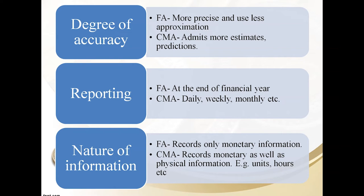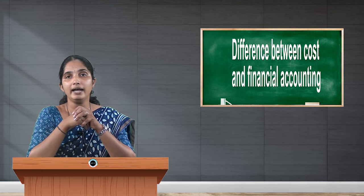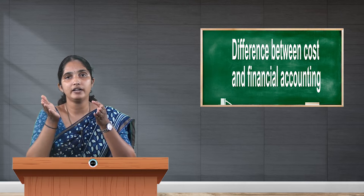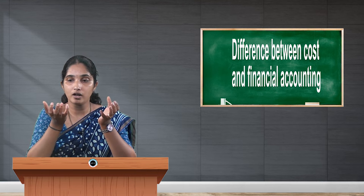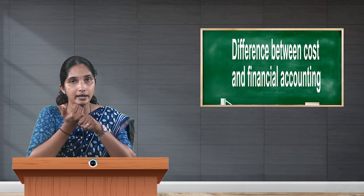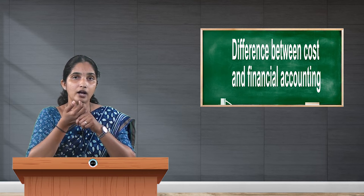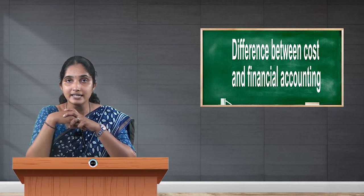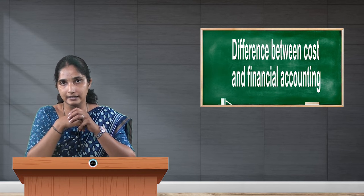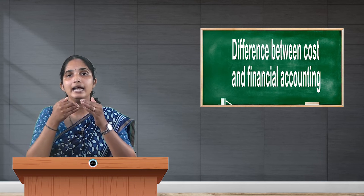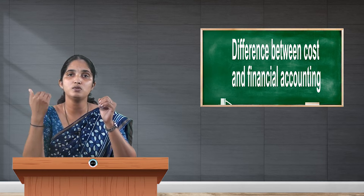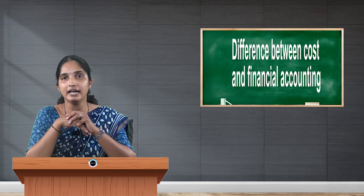The next difference is nature of information. Financial accounting records only monetary information. In a trading and profit and loss account, you will see wages paid to labors, but it will not record the hours spent by the labor in the factory, nor whether wages are paid on a time basis or piece rate basis. Financial accounting records only monetary transactions — the actual value of wages paid.